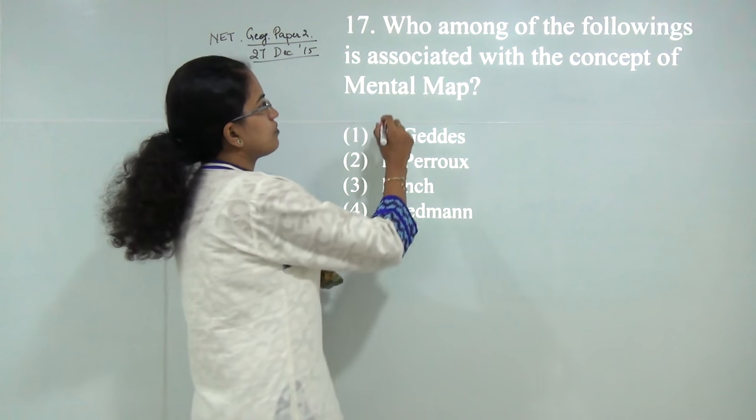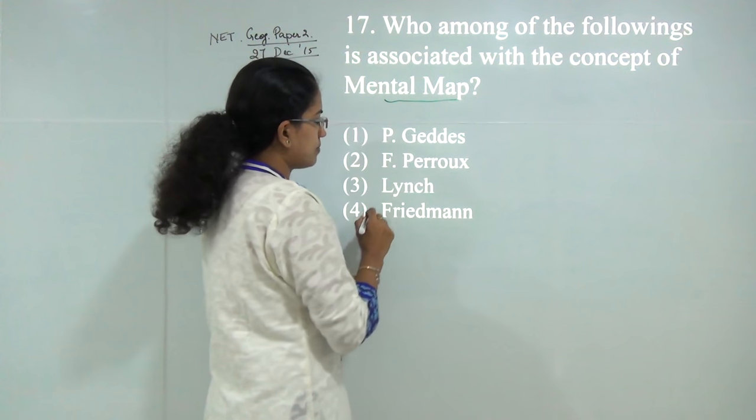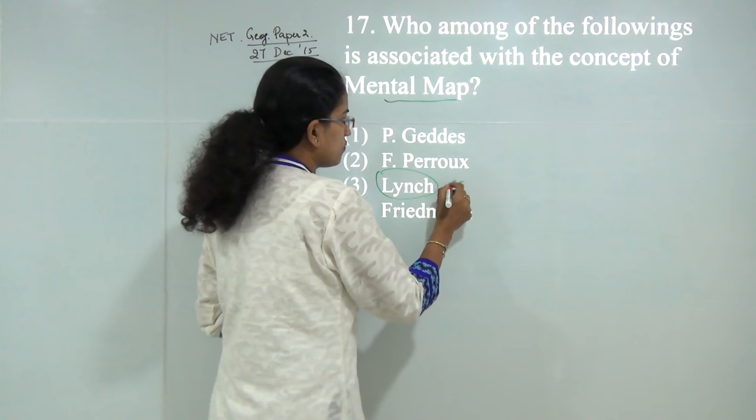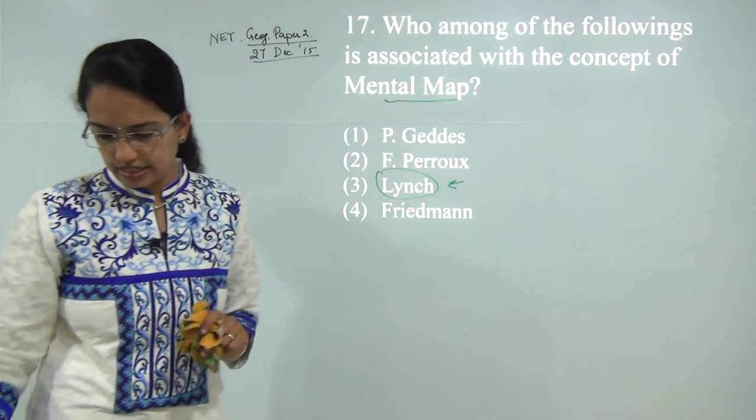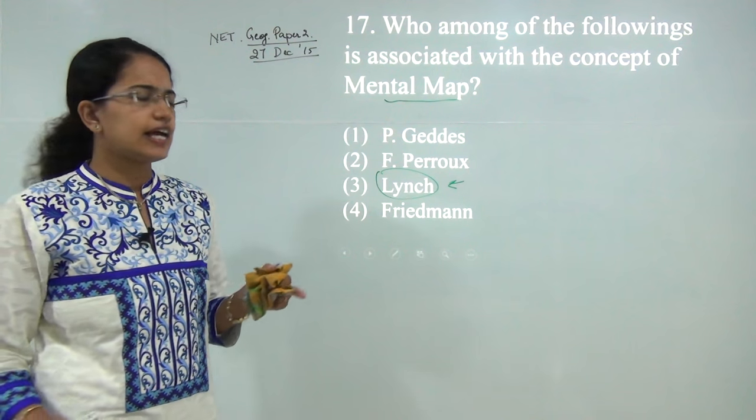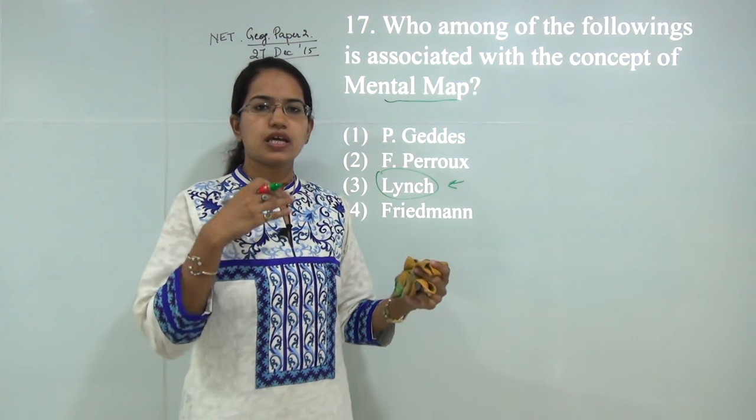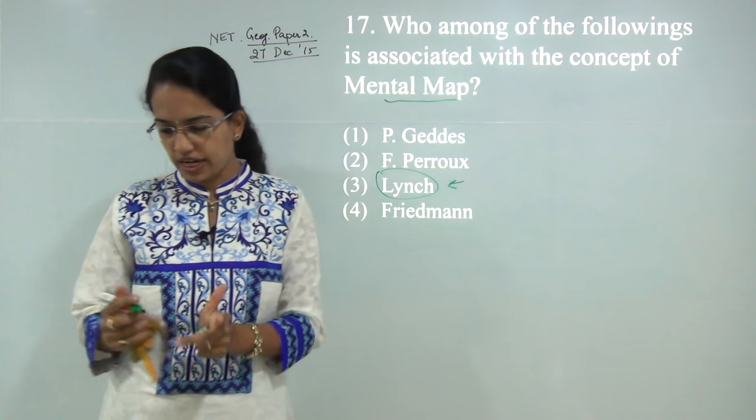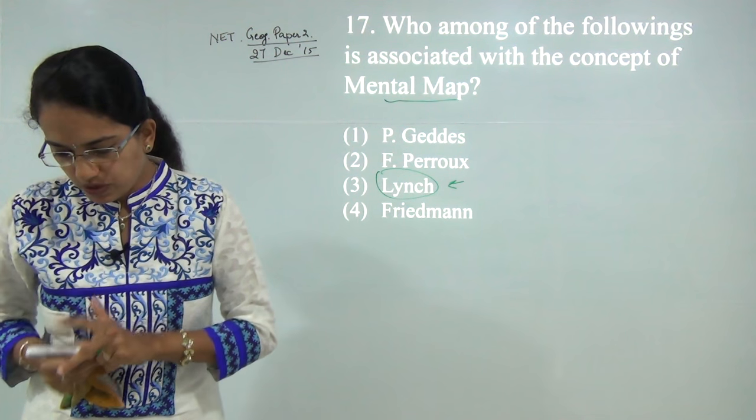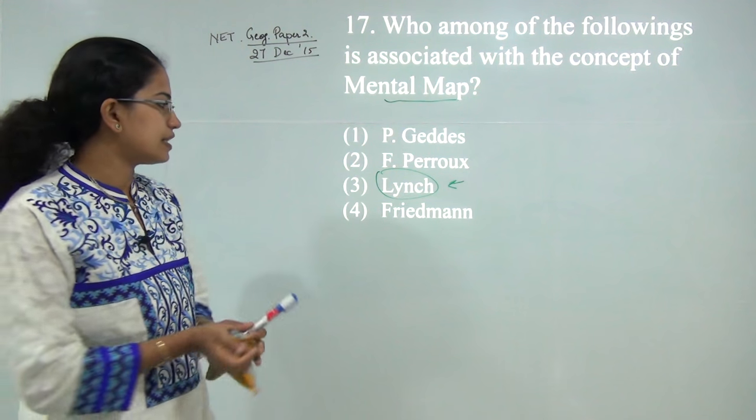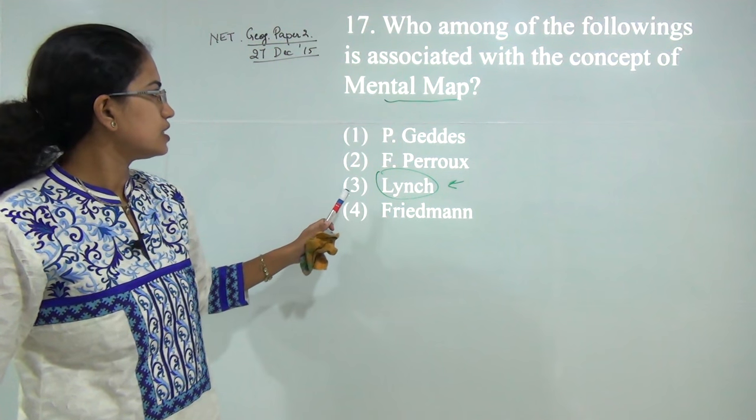Next: which of the following is associated with mental maps? Lynch gave the idea of mental maps. The basic idea is a person's perception about the area they're interacting with—that's called a mental map. The answer is 3.